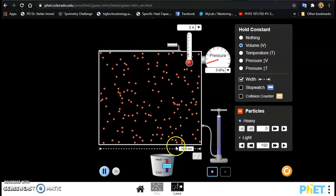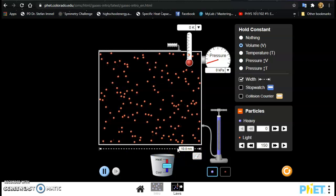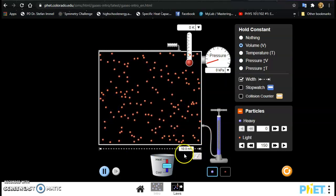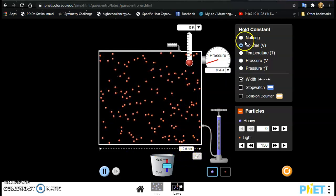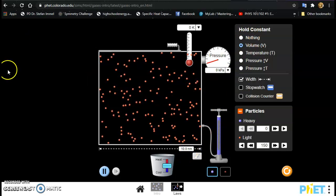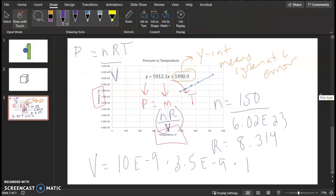Most likely you left it at 10 nanometers. But if you change the width, not a big deal, just make sure to record this. So I think if you have volume constant, you can't change it. Okay, times 10e-9.